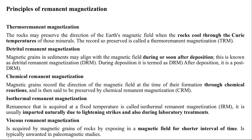Isothermal remanent magnetization (IRM) is remanence acquired at a fixed temperature. It can be naturally imparted on a rock sample by lightning strikes or during laboratory treatments, and is useful for rock magnetism studies in understanding magnetic mineralogy and domain states. The next type is viscous remanent magnetization (VRM), which is actually an unwanted element of remanent magnetization in any paleomagnetic study.